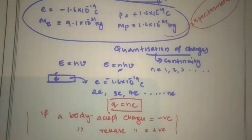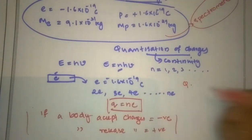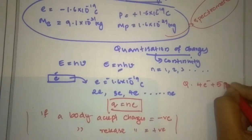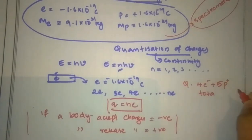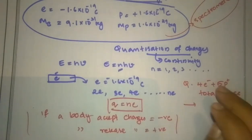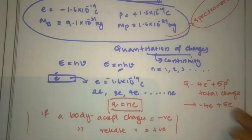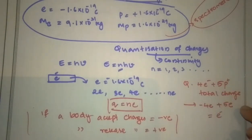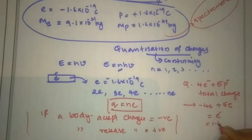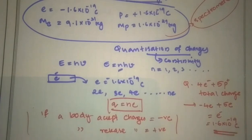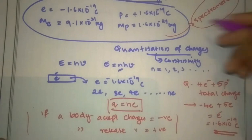Let's do a numerical question. A body has 4 electrons plus 5 protons. What is the total charge? The electron is negatively charged and the proton is positively charged. So: negative 4 electrons plus positive 5 protons equals 1 net positive. The electron and proton value is the same, 1.6 × 10 rise to minus 19 coulomb.